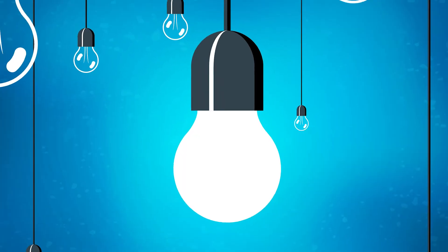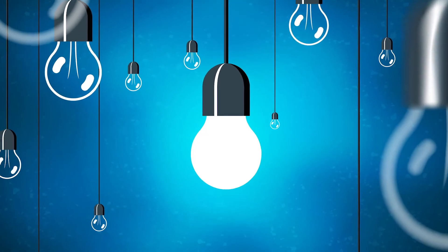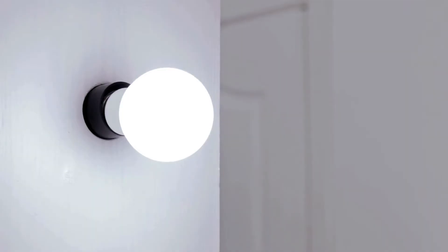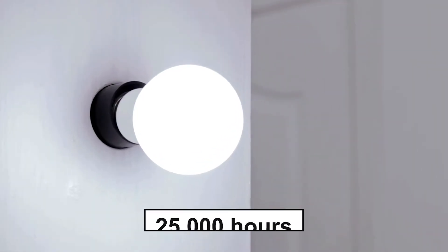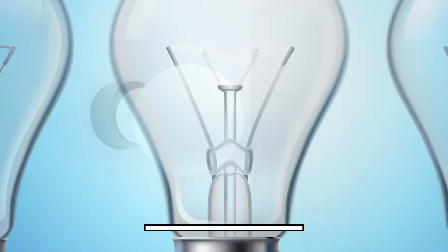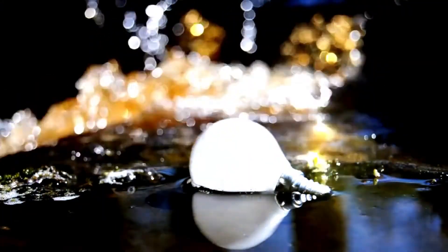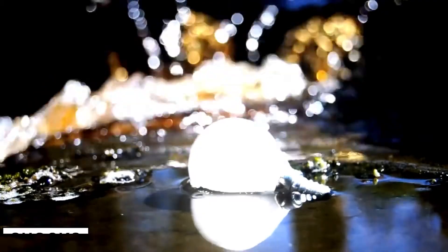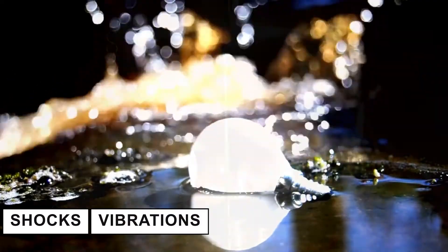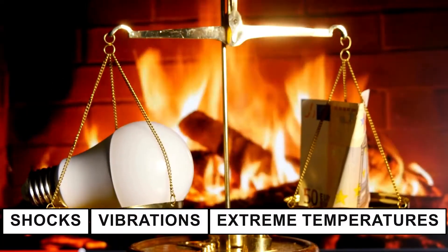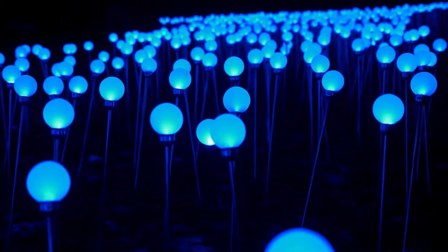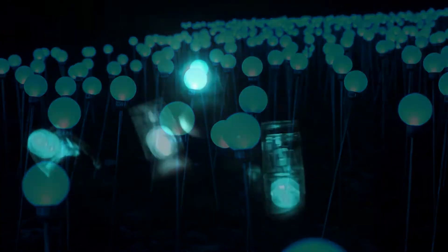LEDs aren't just efficient, they also last a long time. A typical LED bulb can keep shining for over 25,000 hours, which is much longer than old-style bulbs. Plus, they are tough. They can handle shocks, vibrations, and even extreme temperatures, making them a reliable choice for all sorts of lighting needs. Think of them as the marathon runners of the lighting world.